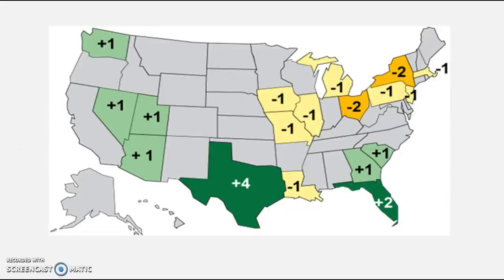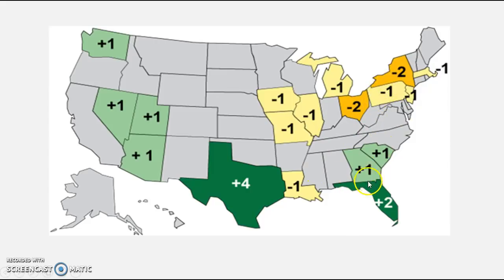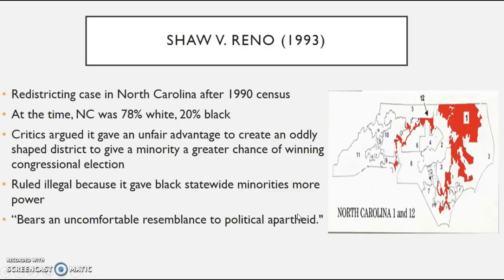When you reapportion every 10 years based on the census, you'll see that Texas picked up four seats and Florida picked up two, while New Jersey and Pennsylvania each lost a seat. It's not that those states lost population — they just didn't grow fast enough. With people moving south for a cheaper cost of living, the South continues to pick up more seats, and this trend continues.